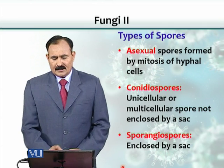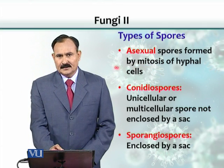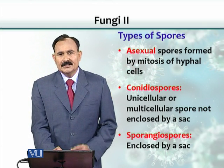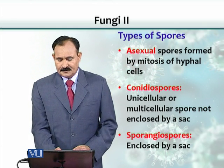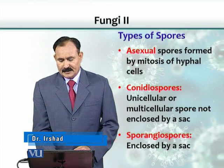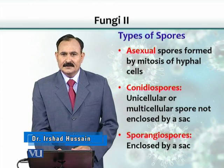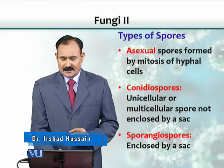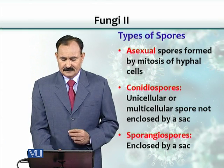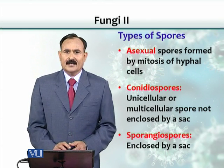Asexual spores are produced by mitosis — simple cell division. There are two major kinds of asexual spores: one is called conidia spores and the other is sporangiospores. The major difference between the two is that conidia spores are not enclosed in a sac, while sporangiospores are enclosed in a sac.